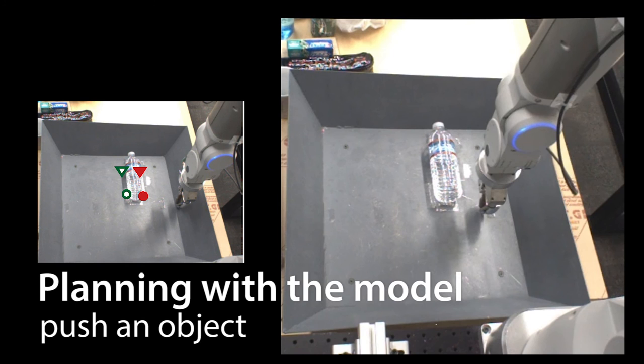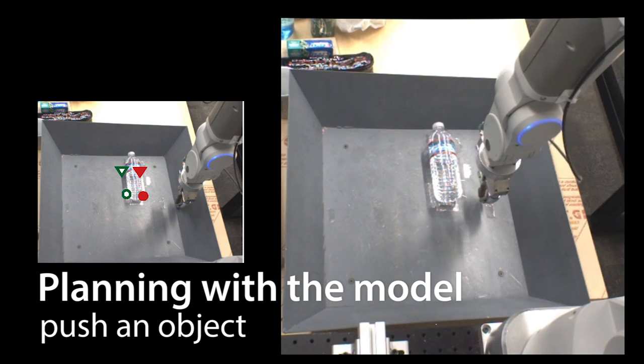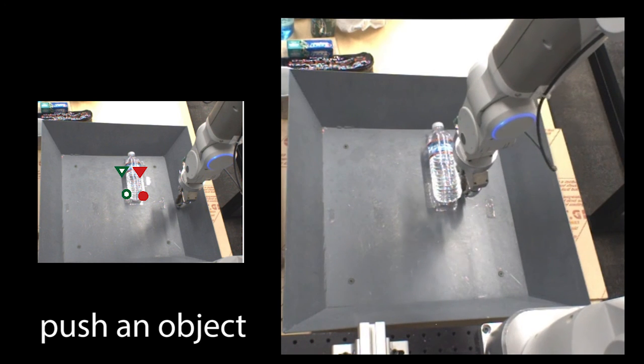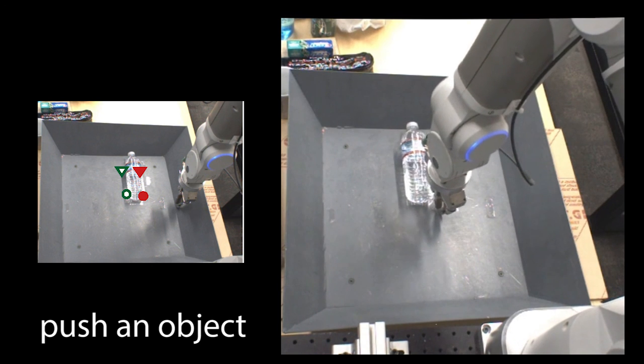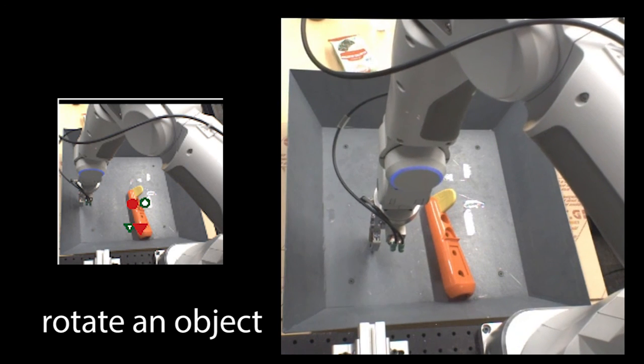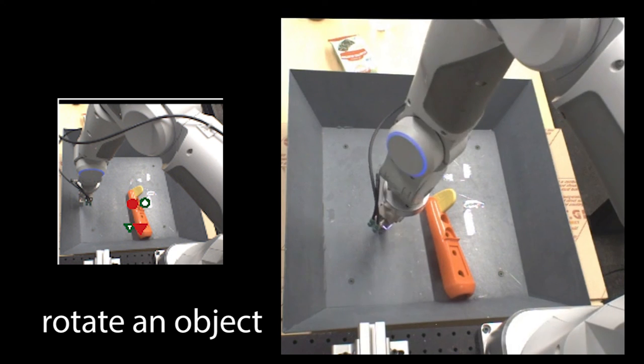For example, the robot can plan to translate objects and rotate objects. This behavior is learned in a completely self-supervised fashion, using only the data collected and the trained action-conditioned video prediction model.